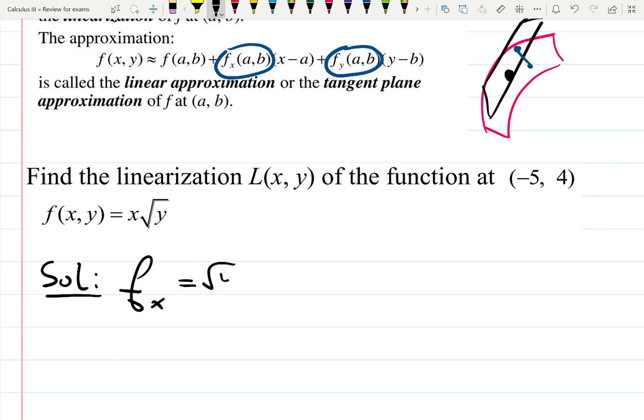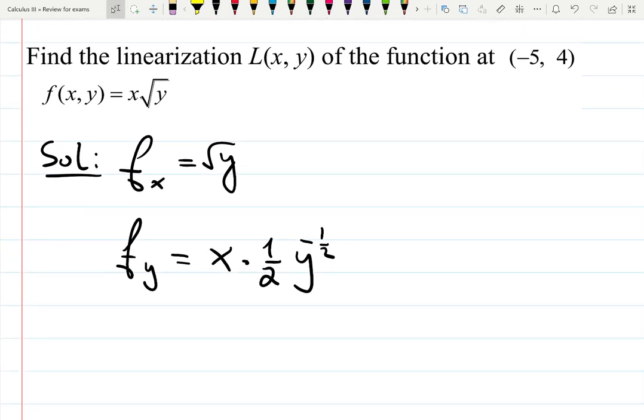That will be just the square root of y. The partial derivative with respect to y will be x times one half y to the minus one half, because now y is treated as a function. This can also be written as x over 2 times the square root of y, if you want that.